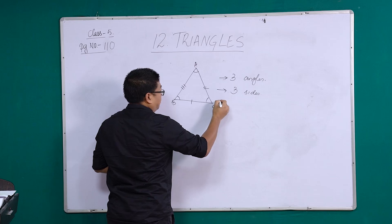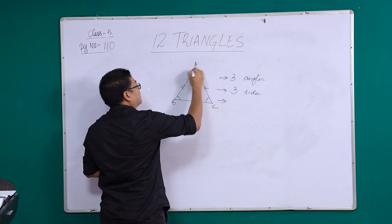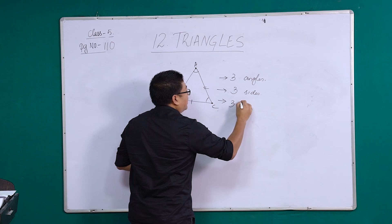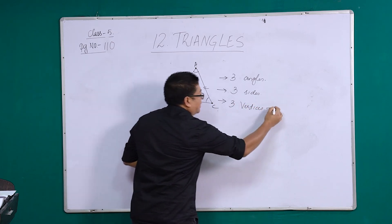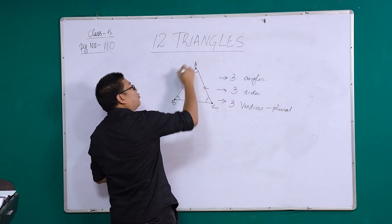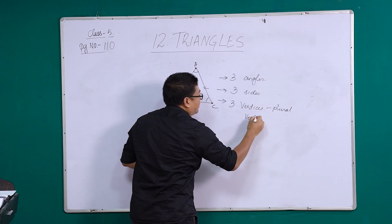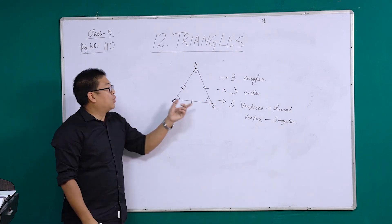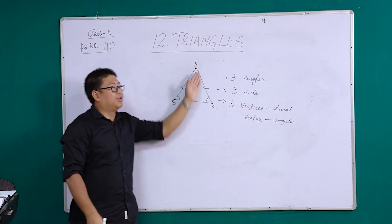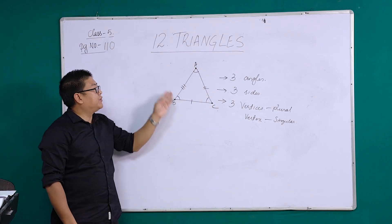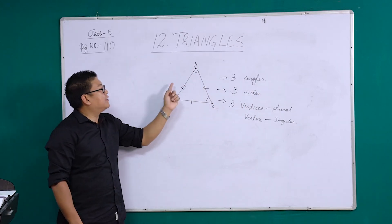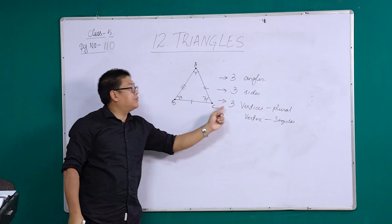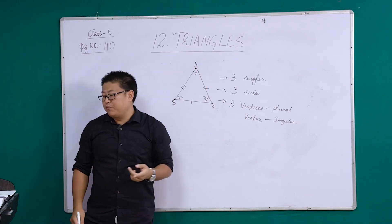The point where angles are formed, these points where angles are formed are called vertices. There are three vertices. Vertices is plural, and if you want to identify one point it is called a vertex — that is the singular form. A triangle is basically any closed figure with three sides. It has three angles, three sides, and three vertices.